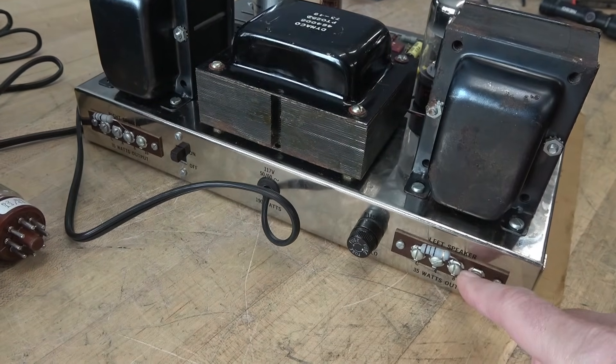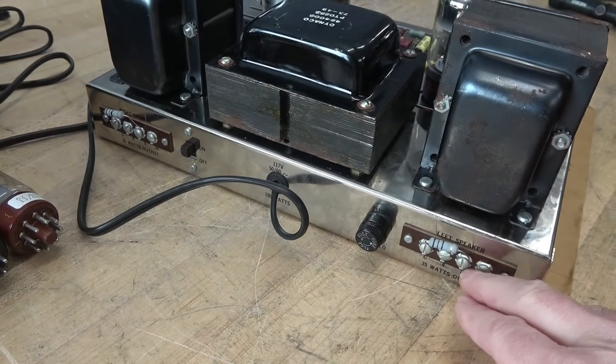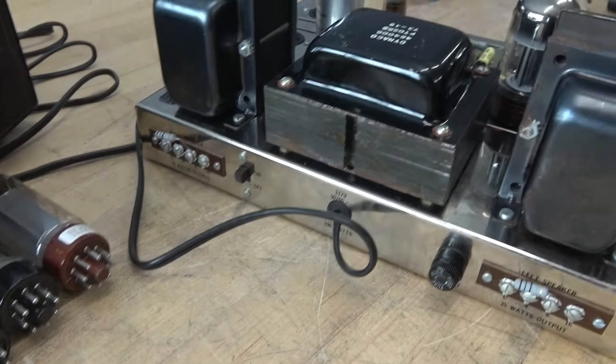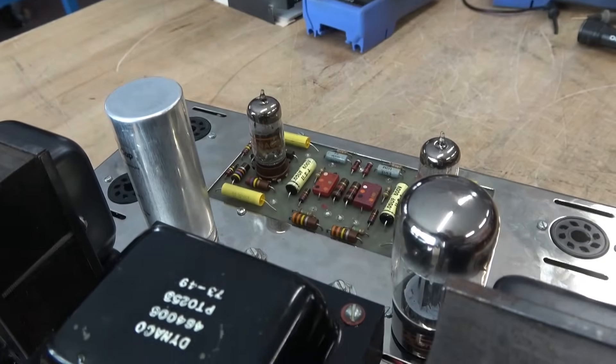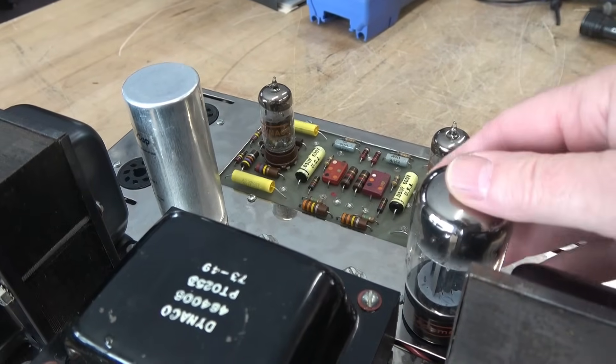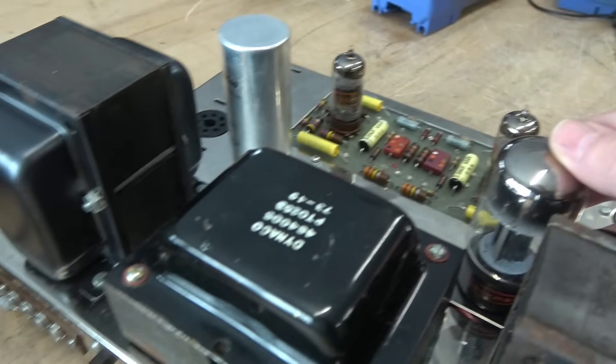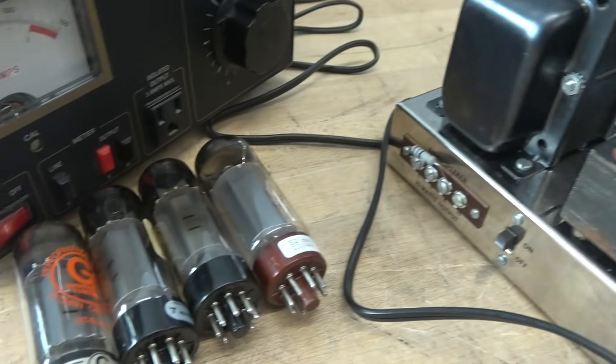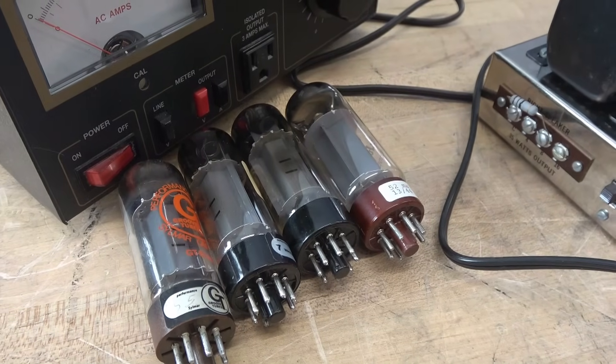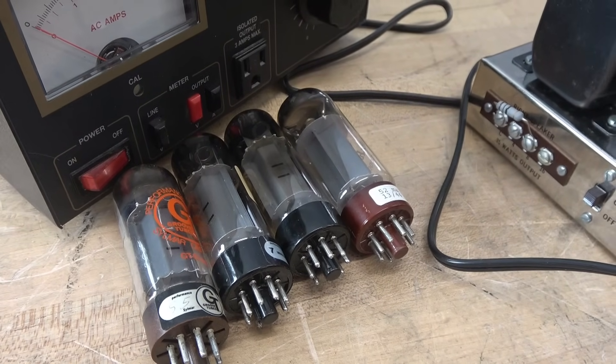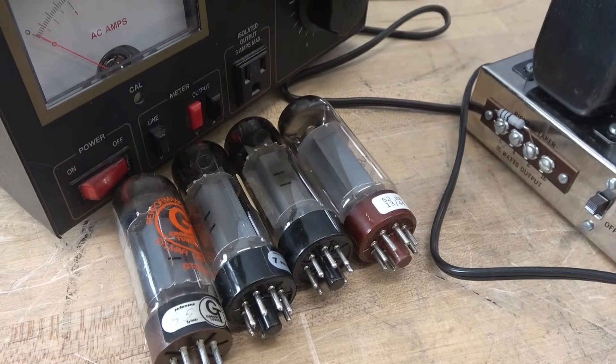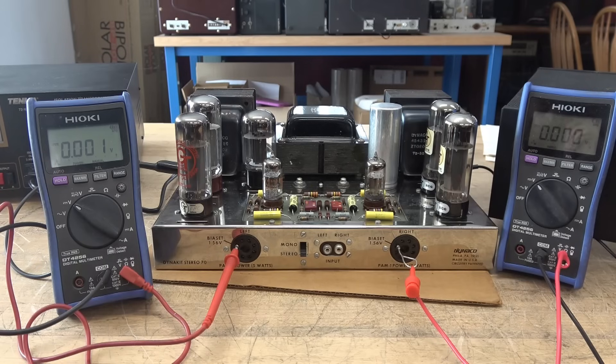For the initial test, I've installed some 10 ohm resistors across the 8 ohm output speaker jacks. I have the 7199s installed. We have a 5AR4 rectifier, but for the output tubes, I'm going to be installing some sacrificial tubes in case something goes wrong. We don't want to destroy those good ones. All right, here we go.